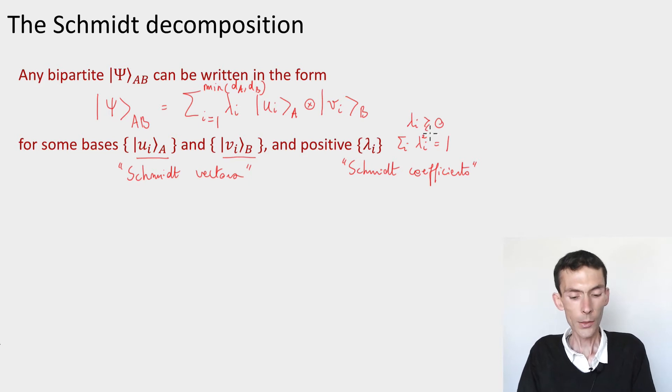So that's what the Schmidt decomposition says. It says for any pure state, there always exists a basis for the A system ui, a basis for the B system vi, and some non-negative coefficients lambda i, such that the state psi can be written as the sum of the lambda i, ui tensored vi.